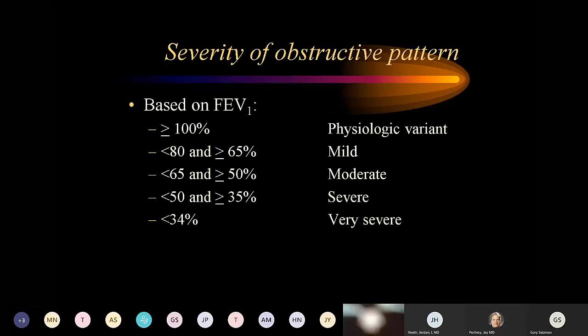For severity of obstruction, we look at the FEV1: 65 to 80% of predicted indicates mild obstruction; 50 to 65% is moderate; 35 to 50% is severe; and less than 35% is very severe. For obstruction, severity is based on the FEV1 value after confirming the low FEV1/FVC ratio.